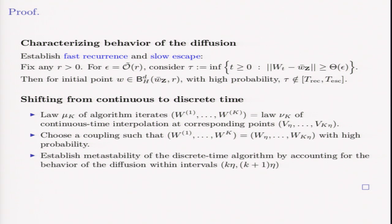Once we have that, we can choose a coupling between the algorithm iterates and the diffusion at the corresponding points such that their values are the same with high probability. Then we can reason about the diffusion at those corresponding points instead of the algorithm, modulo the small probability that their values are different. Then it remains just to consider the behavior of the diffusion within these small time intervals.